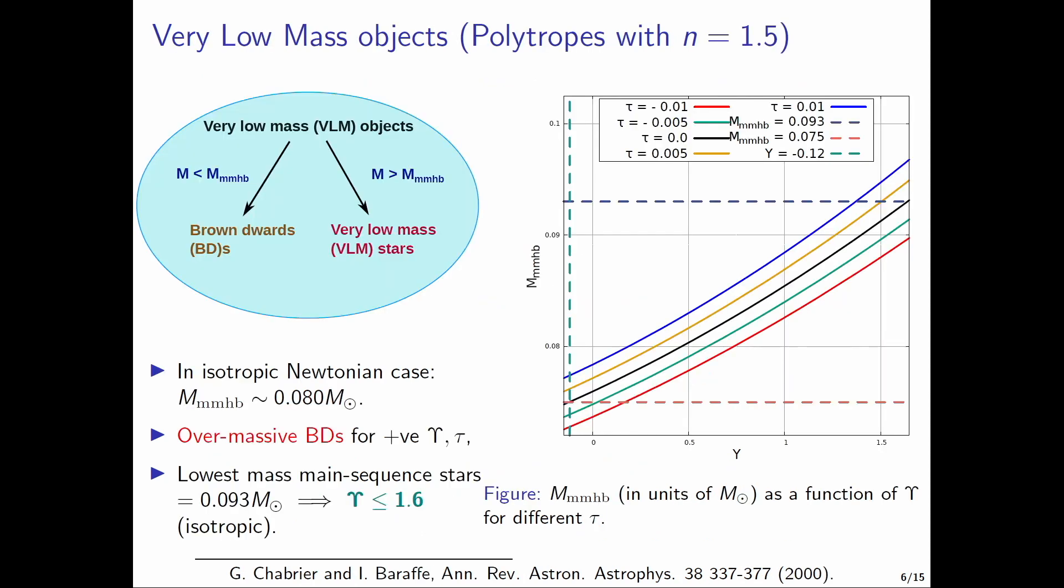As the first step we try to study the implications of both modified gravity and anisotropy on very low mass objects which can evolve into either brown dwarfs or very low mass stars depending upon whether its mass is less than or higher than a particular value called the minimum mass of hydrogen burning, abbreviated as MMHB, with a value of 0.08 solar mass in the isotropic Newtonian case. However we find that for positive values of the anisotropy and modified gravity parameters we obtain brown dwarfs having mass higher than this value, which we refer to as over massive brown dwarfs, and the lowest mass main sequence stars being observed could put some upper bound on the modified gravity parameter. The plot here shows the variation of the minimum mass of hydrogen burning with the modified gravity parameter, and the different colors correspond to different values of the anisotropy parameter.